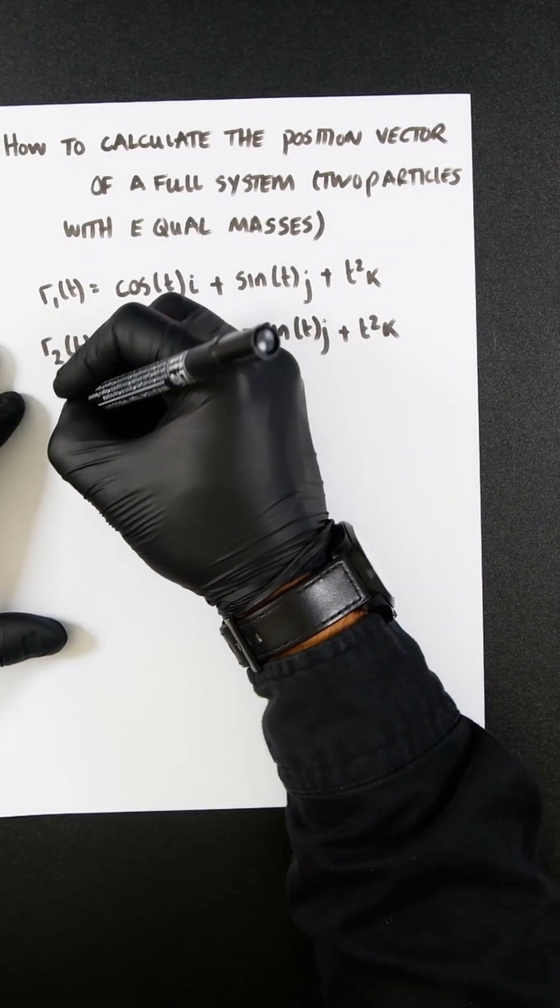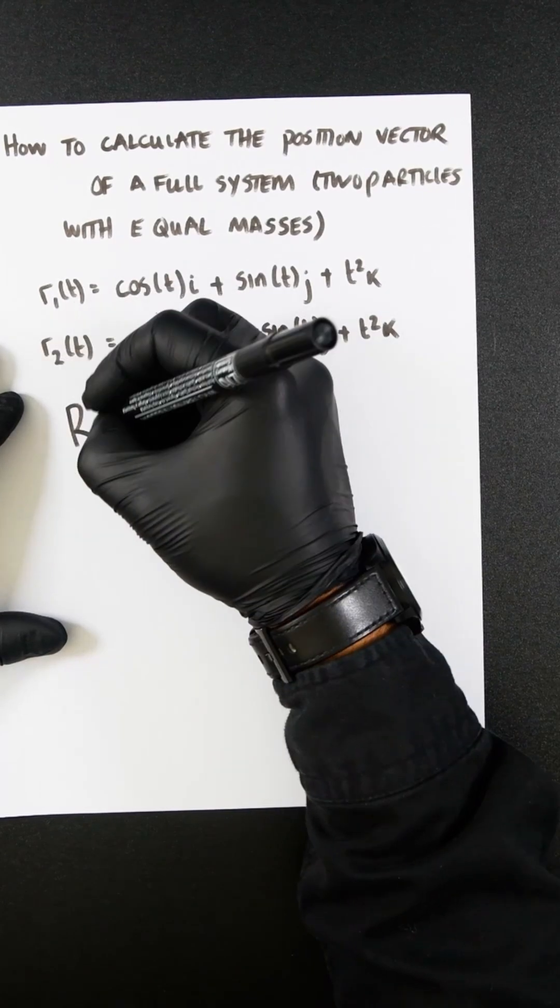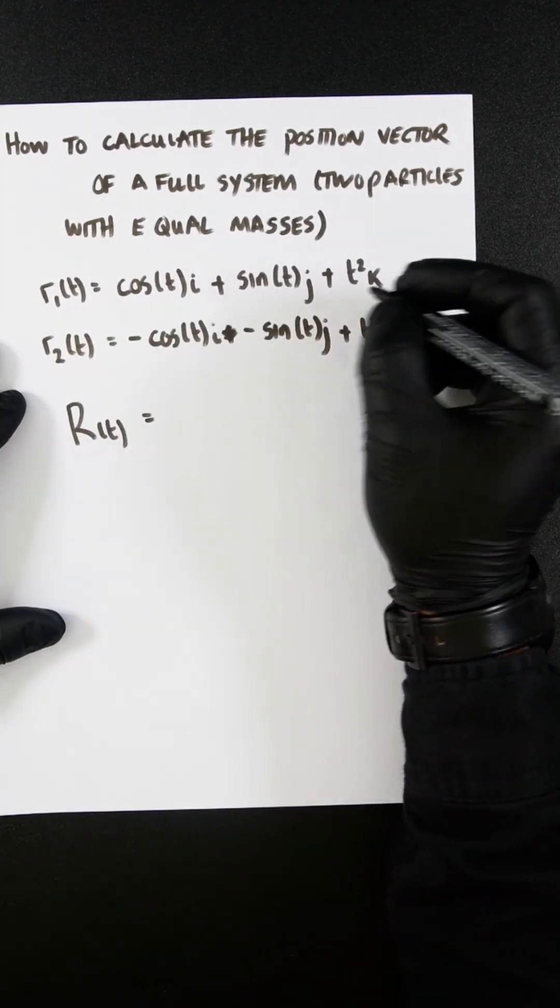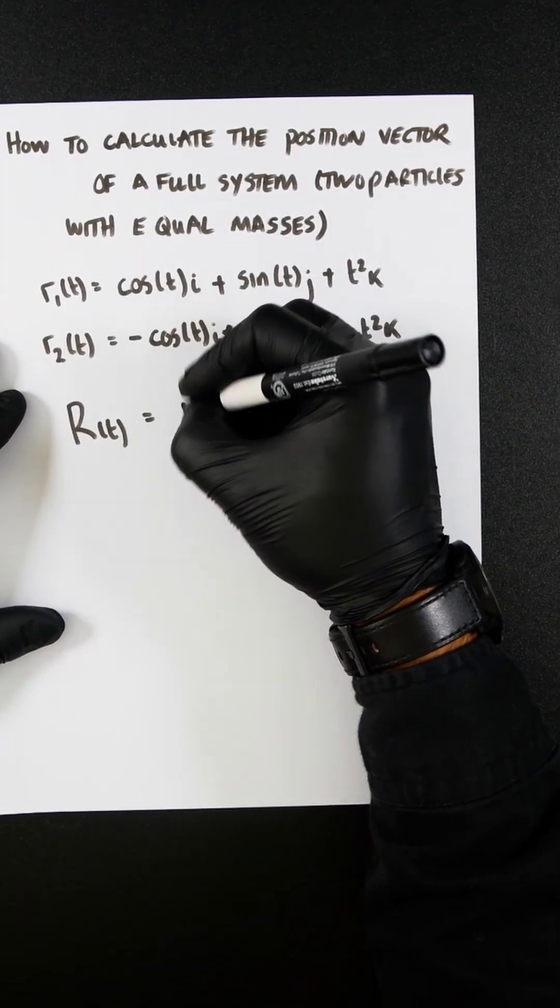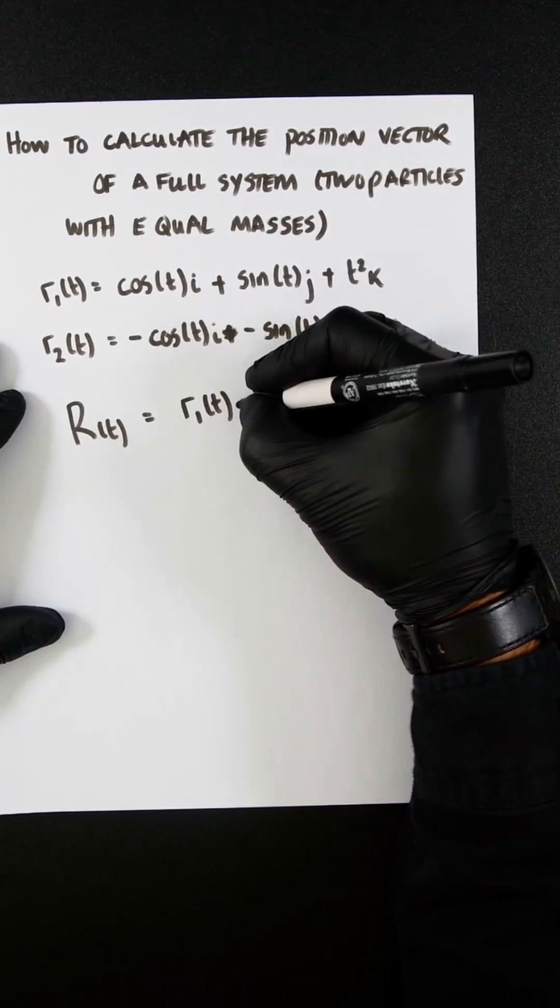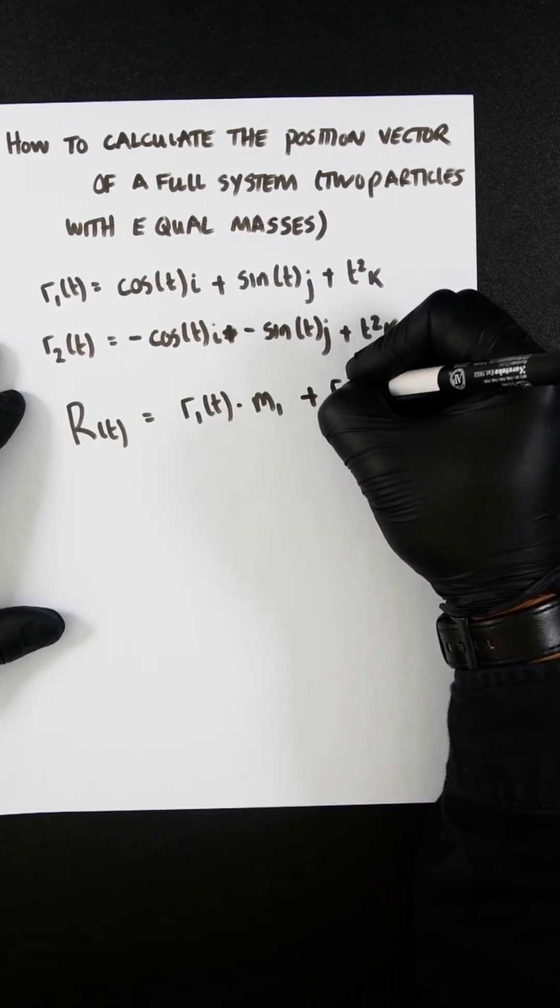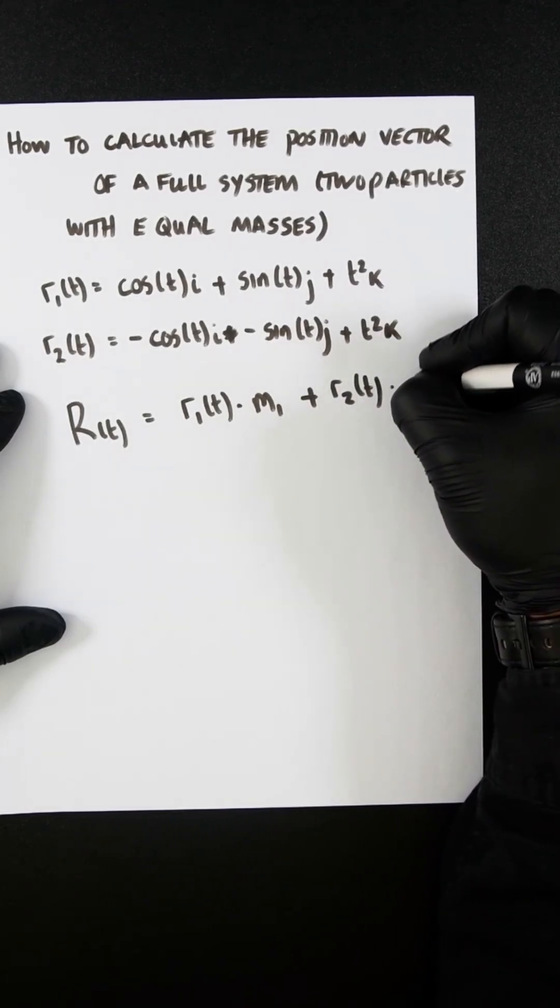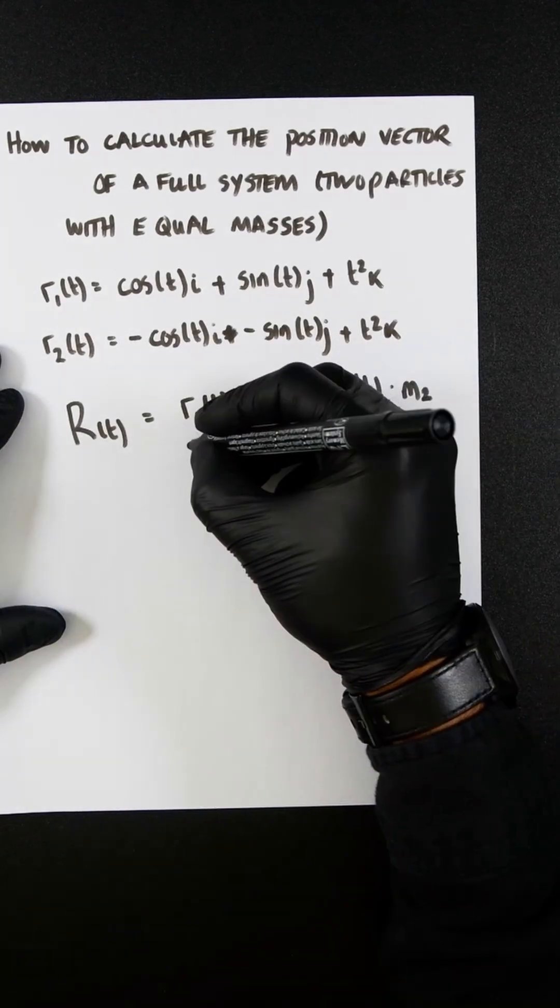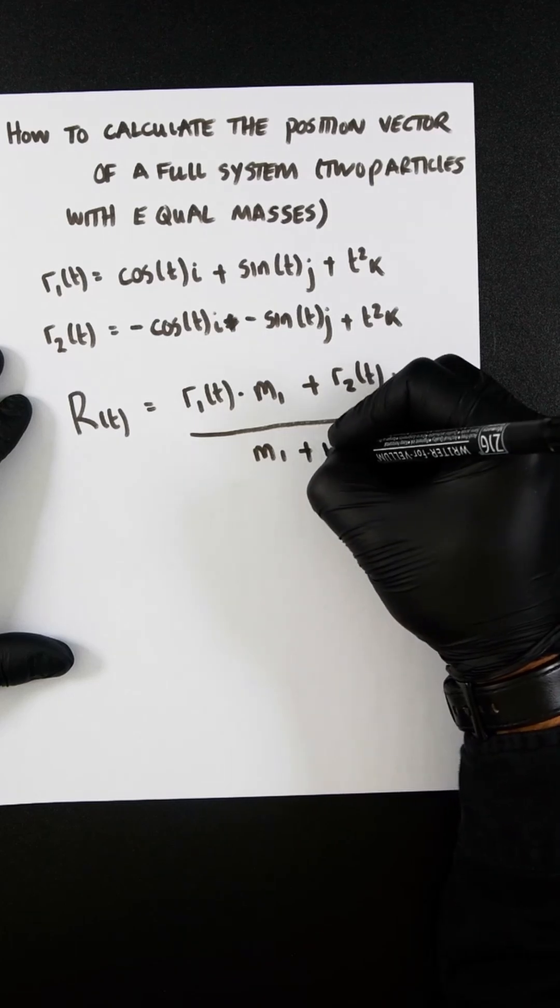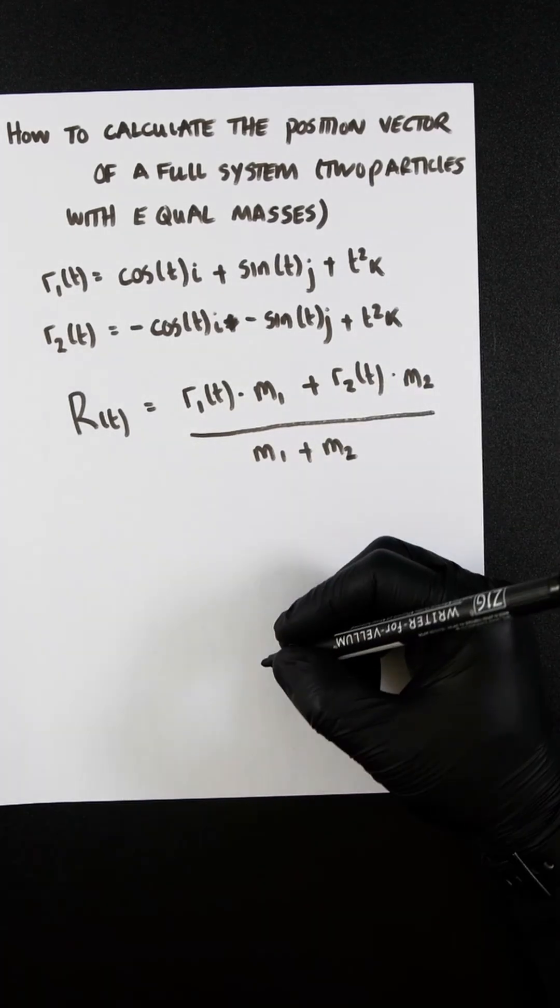To differentiate from the little r, we're going to use big R with respect to t, which is the position vector of the whole system. That's r1(t) times m1 plus r2(t) times m2, and we're going to divide all of it by the addition of both the masses.